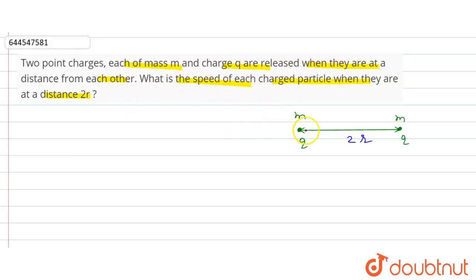So what is the speed of each charge particle? We have to find the speed v of charge particle. See, we have potential energy between two charges. Potential energy is equal to k q1 q2 upon r.